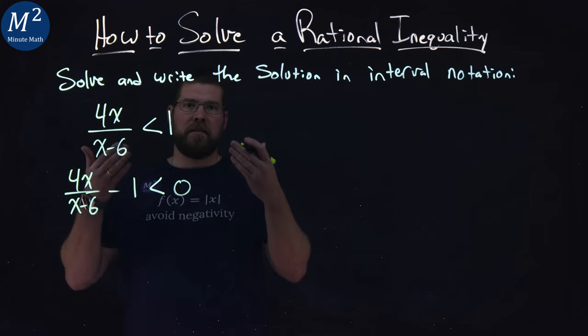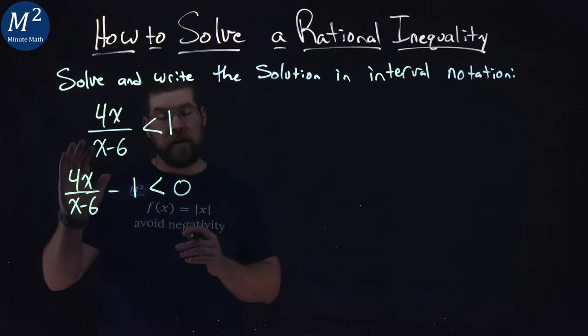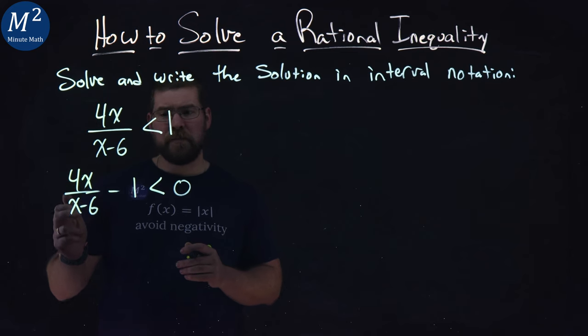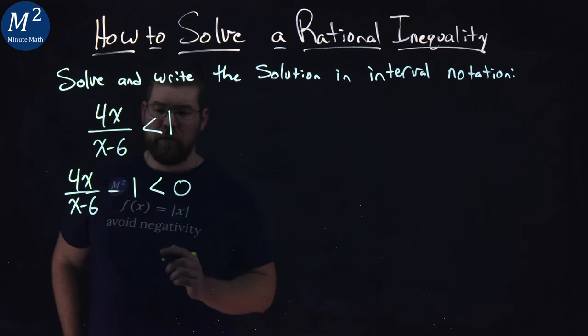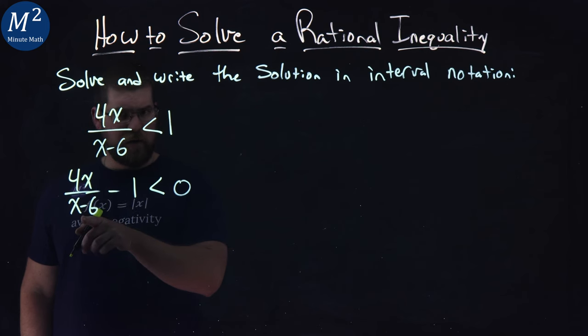But I want to create this as a single rational expression on the left-hand side. I want it as a fraction. So to combine these two, I'm going to rewrite negative 1 with the denominator here,